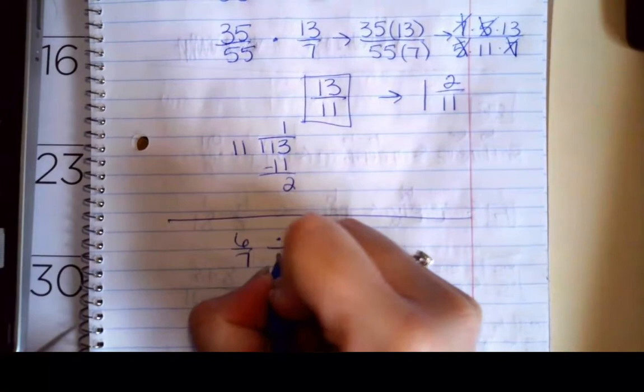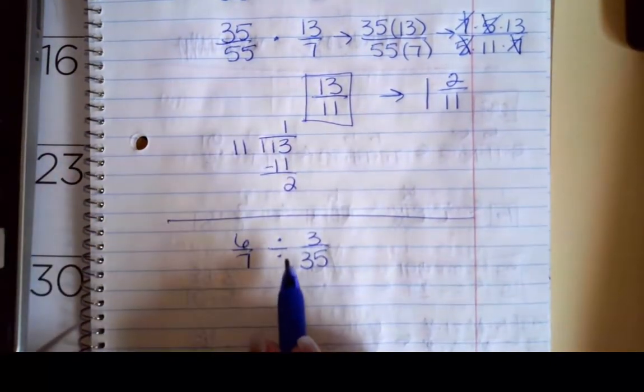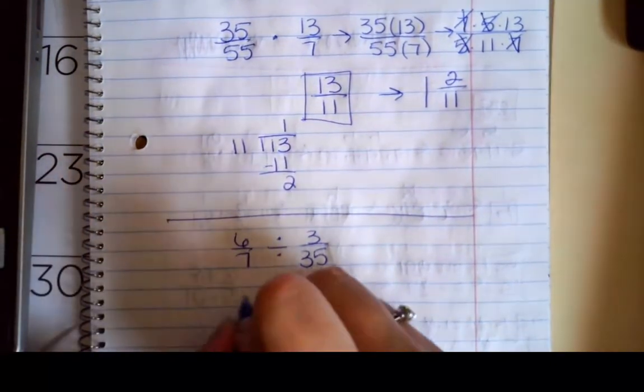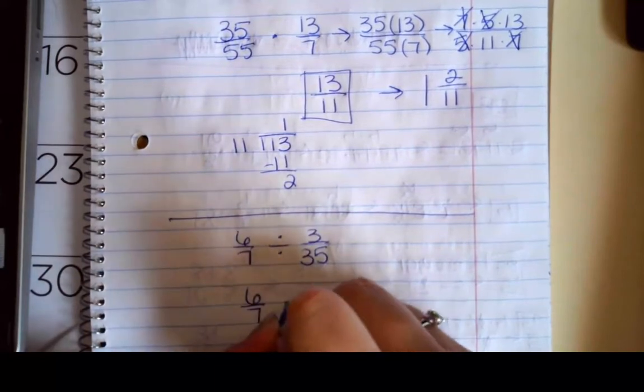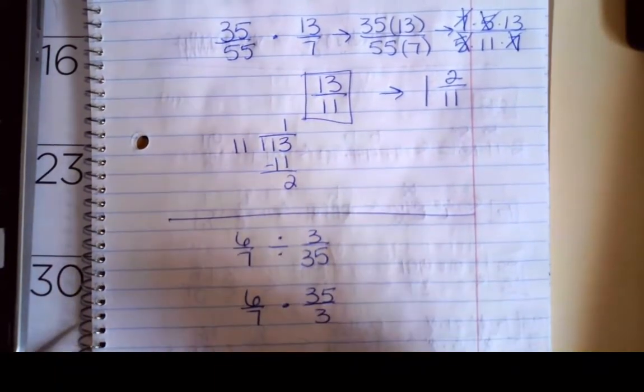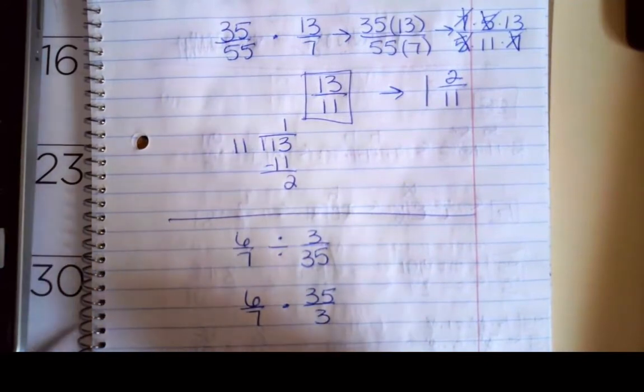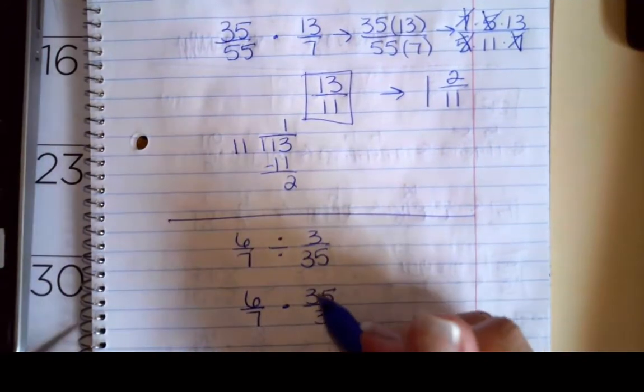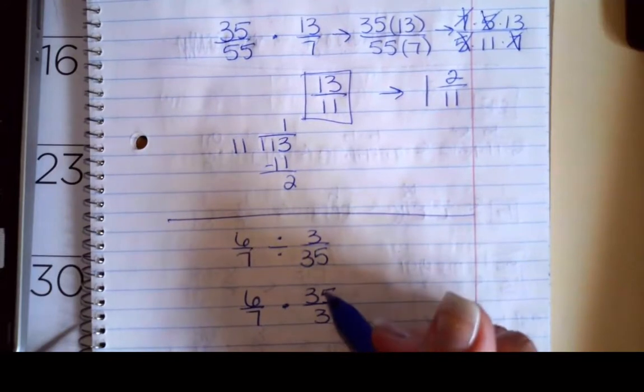So I've got 6/7 divided by 3/35. So I notice something right off the bat. I've got division. So I'm immediately going to rewrite that as multiplication, and I'm going to flip the second fraction, not the first one.